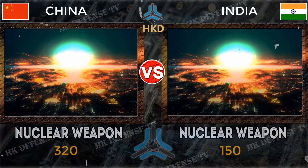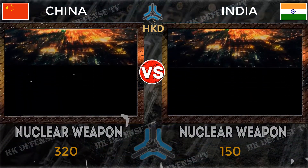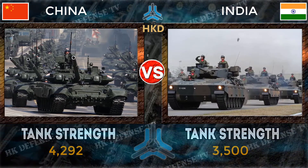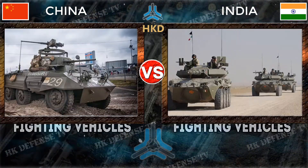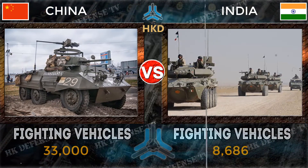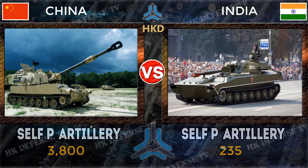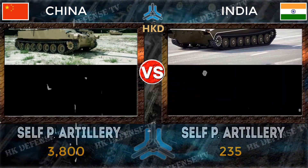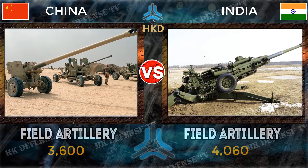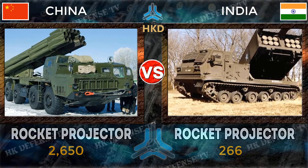Nuclear weapons: China 320 and India 150. Tank strength: China 4,292 and India 3,500. Armed fighting vehicles: China 33,000 and India 8,686. Self-propelled artillery: China 3,800 and India 235. Field artillery: China 3,600 and India 4,060. Rocket projectors: China 2,650 and India 266.